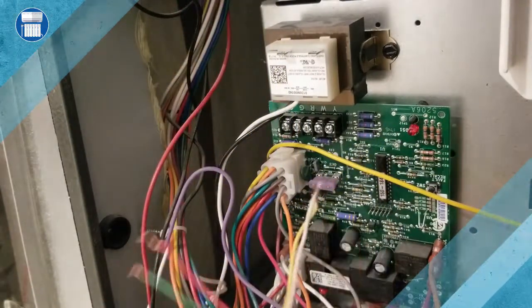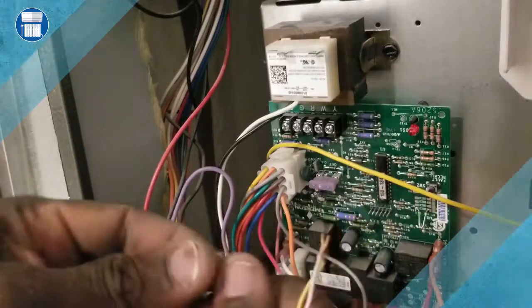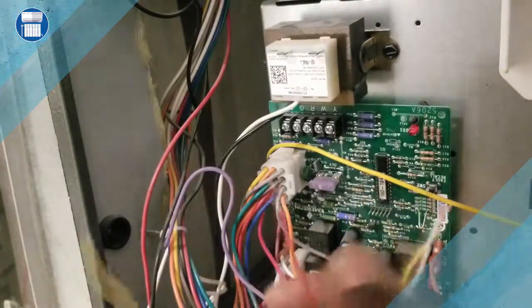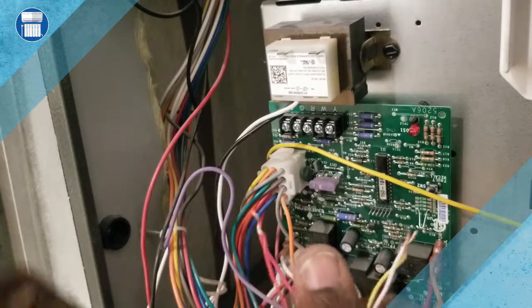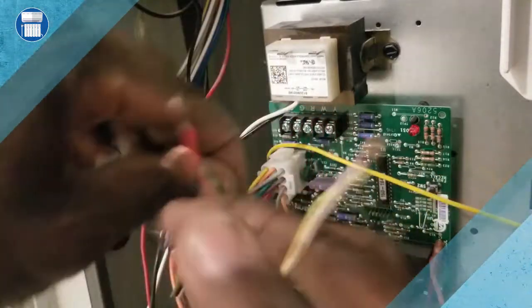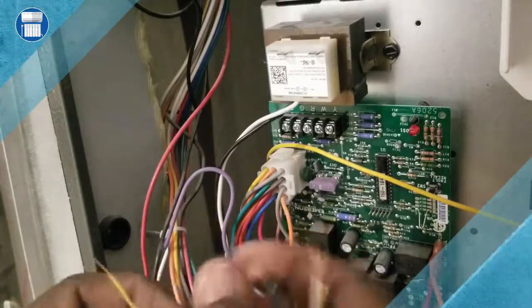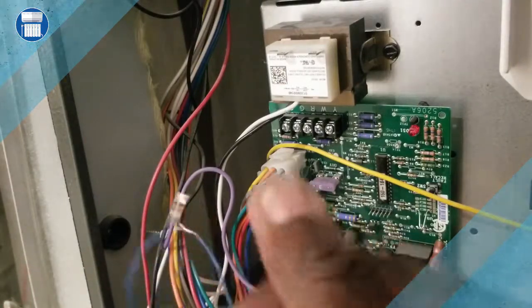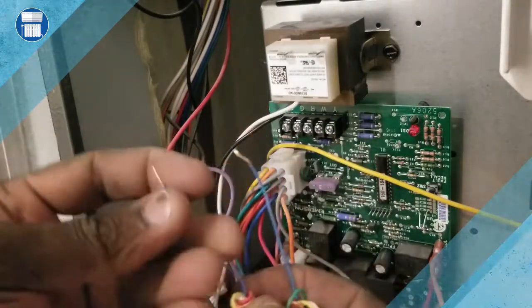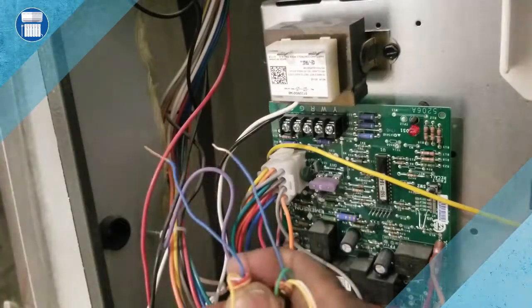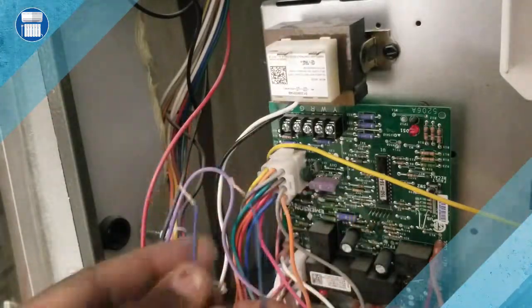So let's go ahead and wire this unit up. First of all, we're going to take our common from our thermostat and our common to the outside. Both of them are going to go to the C terminal. C for common. So it's pretty simple how to wire up these units.